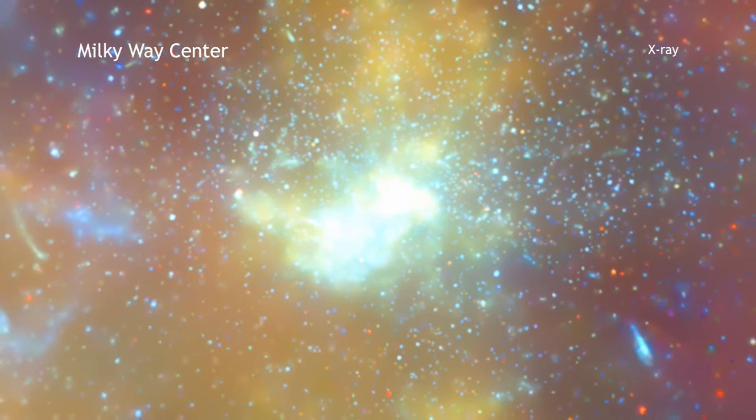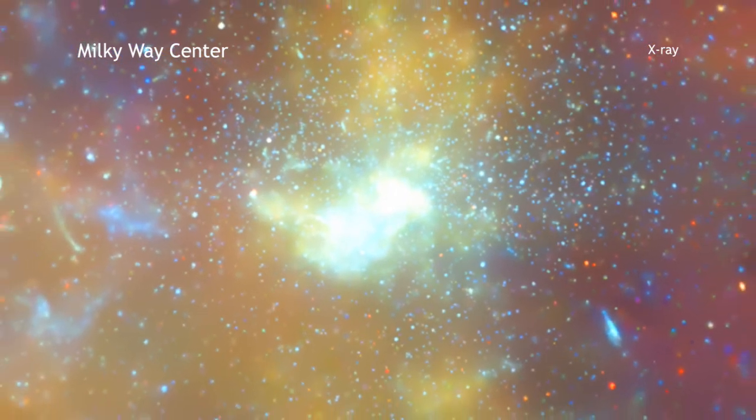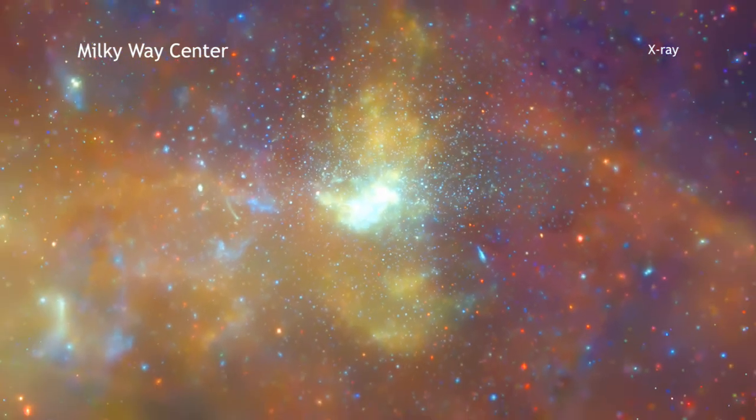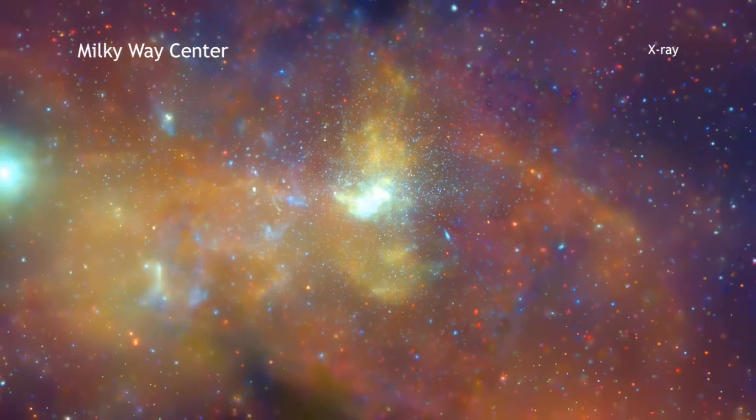The diffuse X-ray light comes from gas heated to millions of degrees by outflows from the supermassive black hole, winds from giant stars, and stellar explosions.